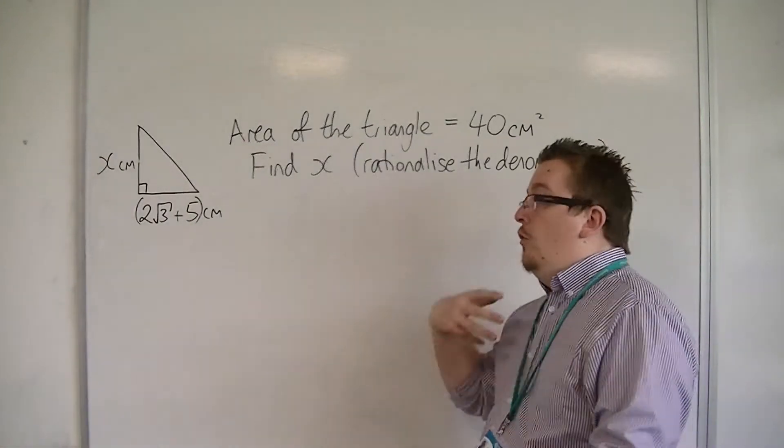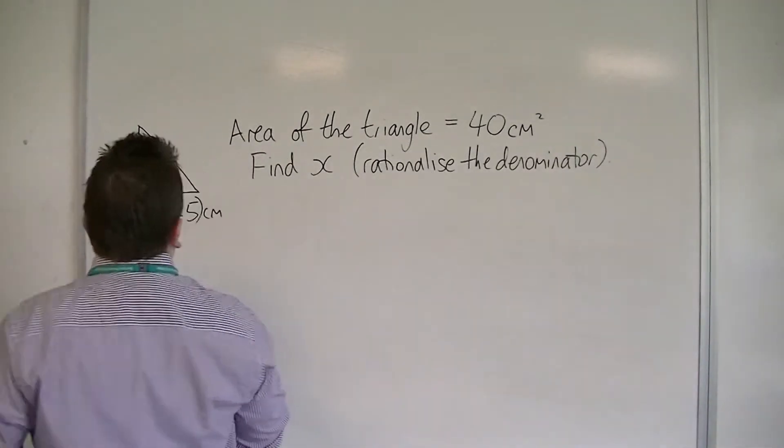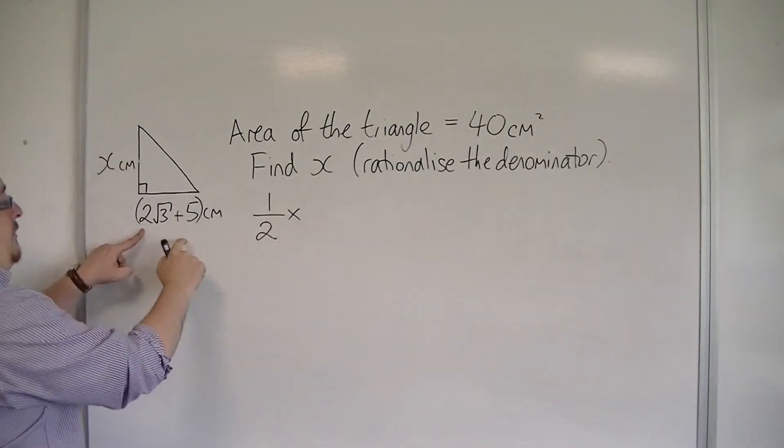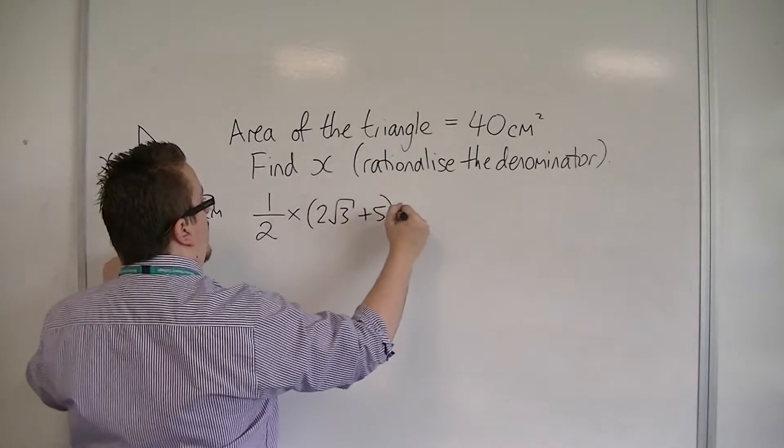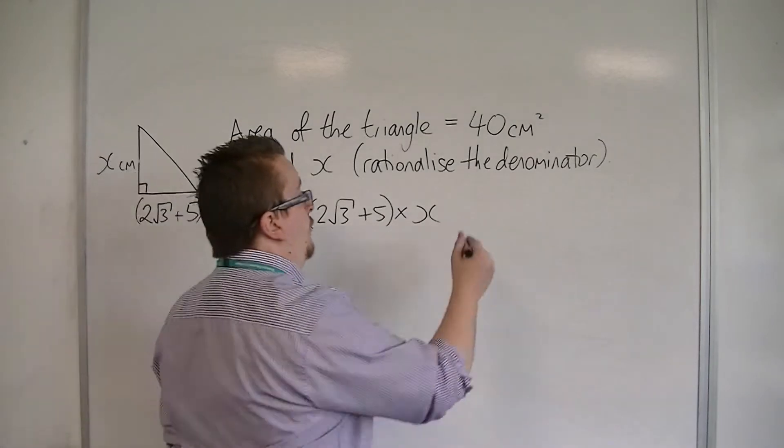For the triangle, the area is half base times height. So, one-half times by the base, 2 root 3 plus 5, times the height, x, is going to be equal to 40.